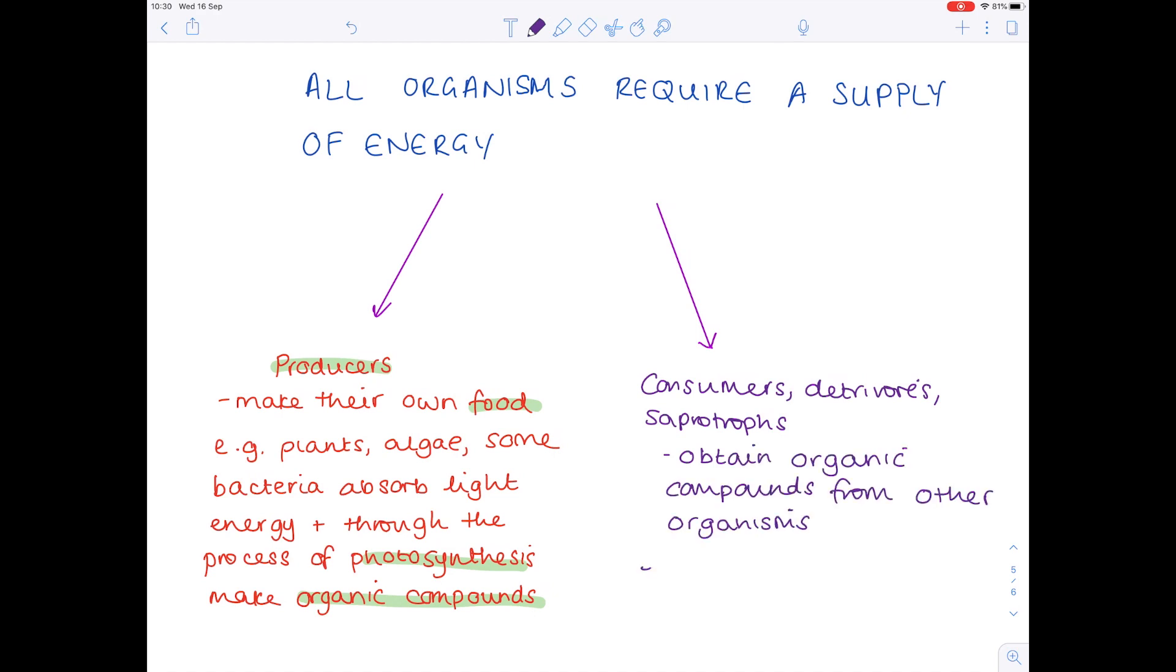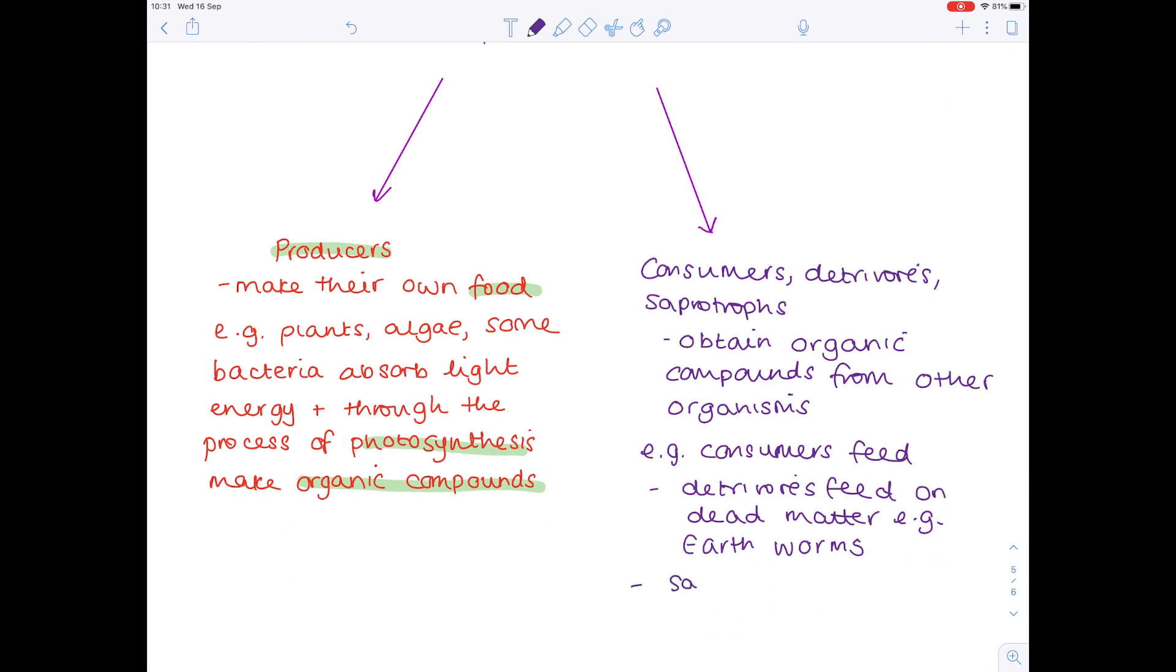Just to give you more detail: consumers feed. Detritivores again feed but they feed on dead matter and earthworms are good examples of detritivores. Saprotrophs include fungi and they digest dead matter extracellularly, so outside of their bodies, for example fungi.